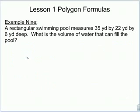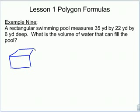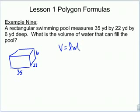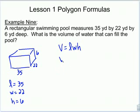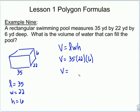Example 9. A rectangular swimming pool measures 35 yards by 22 yards by 6 yards deep. What's the volume of water that can fill the pool? Rectangular pools look like a box shape. The formula to find volume is length times width times height. My length is 35, my width is 22, and my height is 6. Plugging those numbers in: 35 times 22 times 6 gives a volume of 4,620 cubic yards.